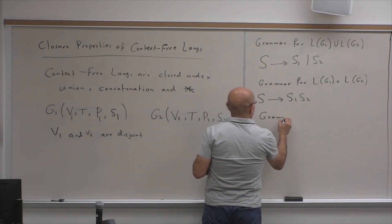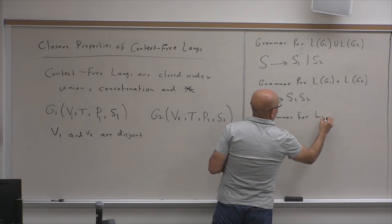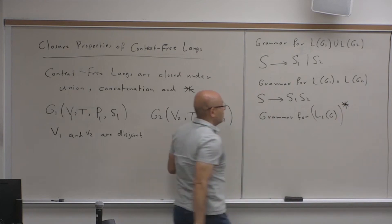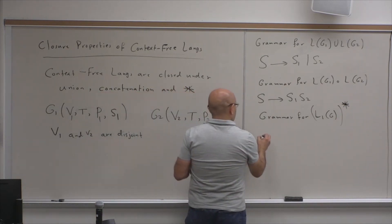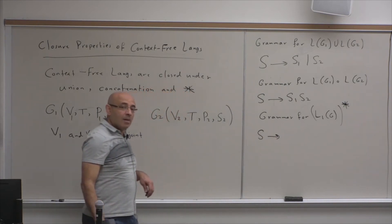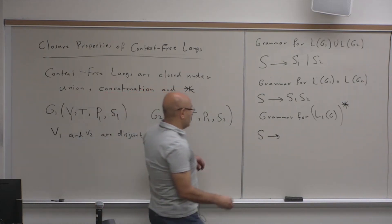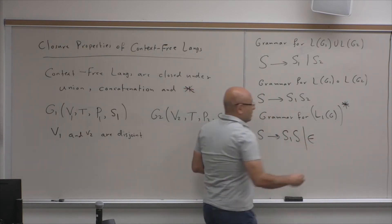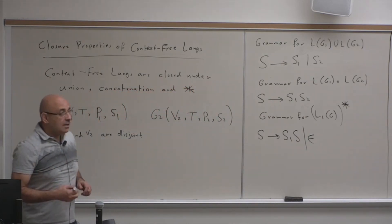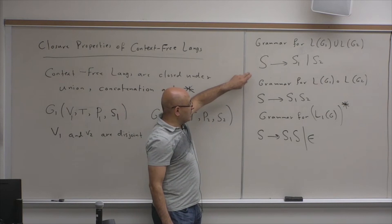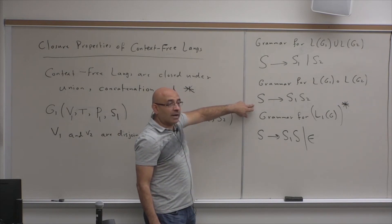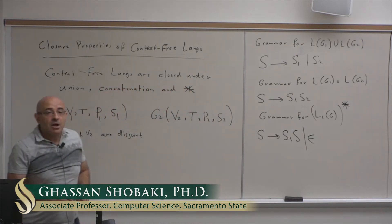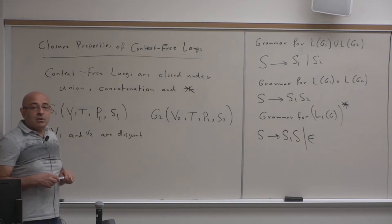For the star of a language, the grammar uses S → S1 S | ε. So it's very straightforward to construct a grammar for the union, for the concatenation of two languages, and for the star of a language. Therefore, context-free languages are closed under union, concatenation, and star.